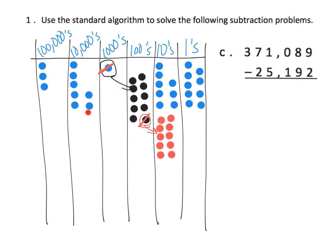Then I go to the ten thousands place. I have seven, take away two — I can do that. But looking back at the thousands place, I now have nothing there but I'm supposed to take away five thousands. So I'm going to have to do more regrouping. I'll take one of these ten thousands and get ten in the thousands place — one through ten. So instead of having seven in the ten thousands place, I now have six.